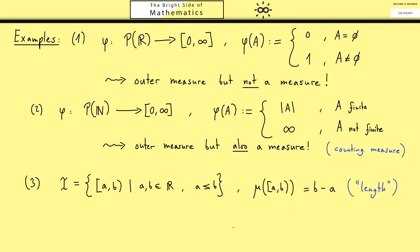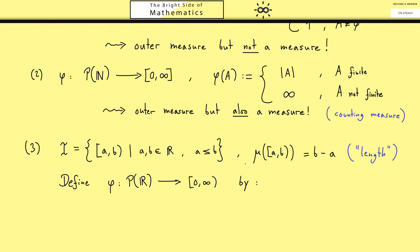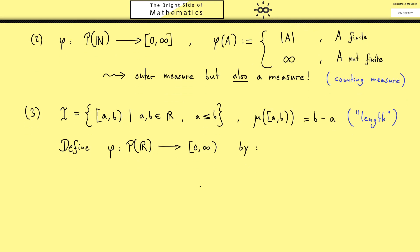When you look back at Carathéodory's extension theorem, you see that this set of intervals is what we called a semi-ring of sets, and the function mu was a pre-measure. We also remember that we want to measure more sets than just intervals, and if we want to measure all sets, this leads us to the power set and therefore to the outer measure. Hence we define our phi on the power set of R.